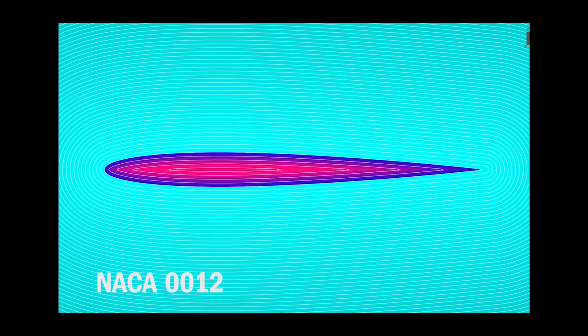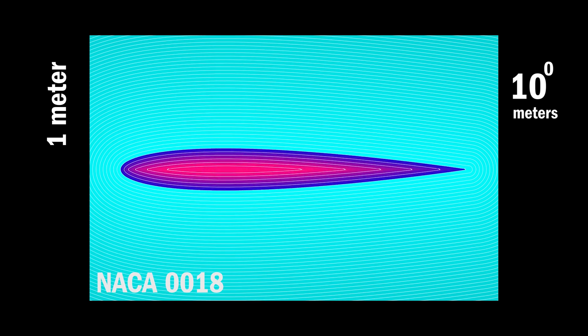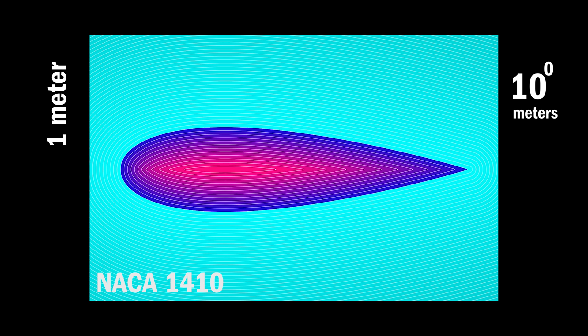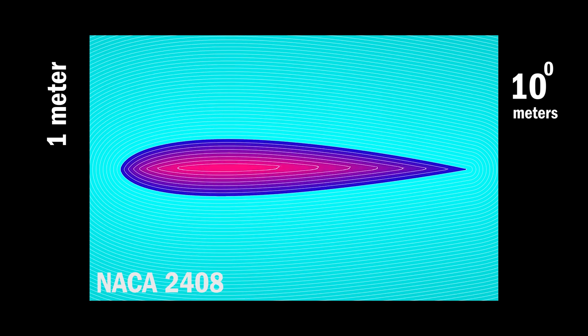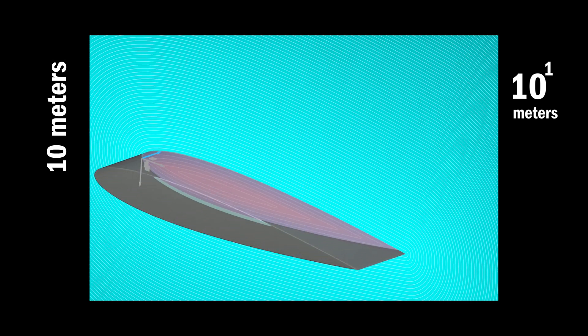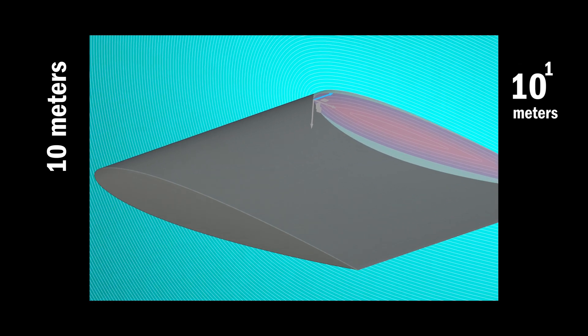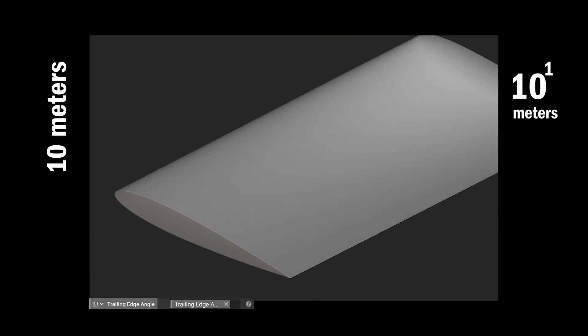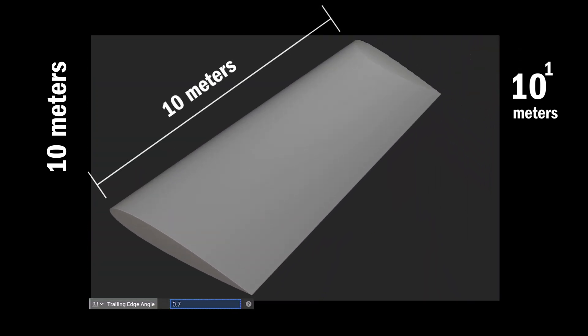An airfoil marks the beginning of our journey through the universe of NTOP 5. We start with a scene that is 1 meter wide, the airfoil shape driven by parametric thickness and camber fields as defined by the National Advisory Committee for Aeronautics, or NACA. We extrude up to 10 meters and see that design parameters varying spatially can also be used to control the shape of the wing, like the trailing edge sweep angle.